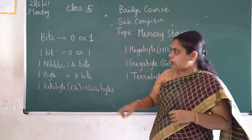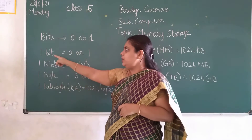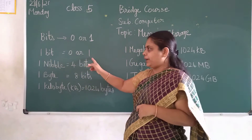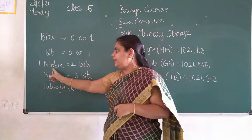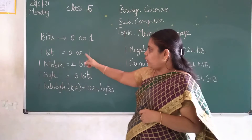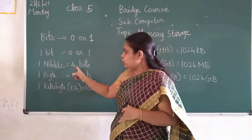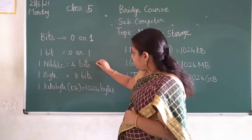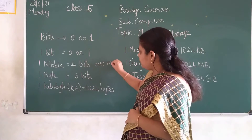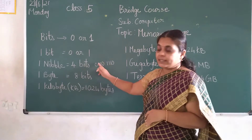So first we will see what is bits. Bit is a binary digit. So 1 bit is equal to 0 or 1. Then 1 nibble is equal to 4 bits. It can be anything children — like 0, 1, 1, 1, 0, 1, 1, 1, 0 — like this. This is called a nibble. 4 bits are there.